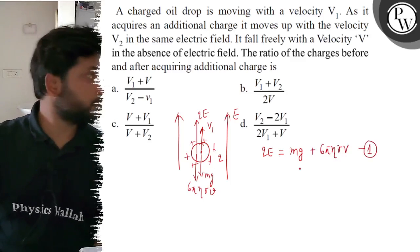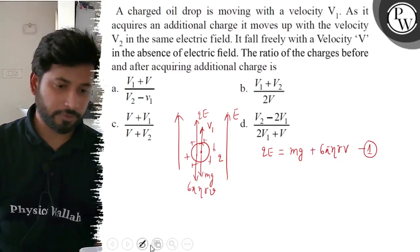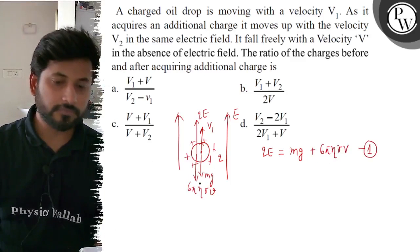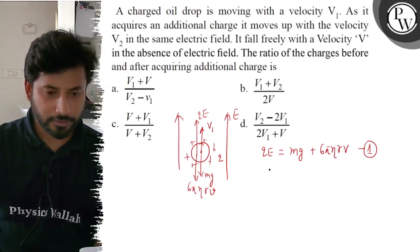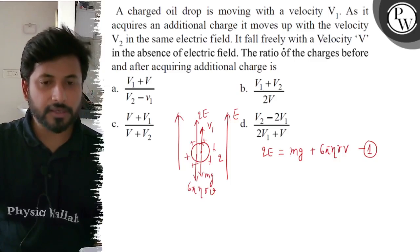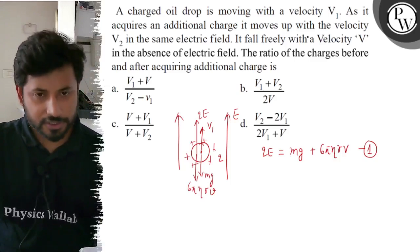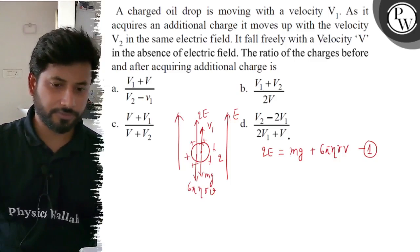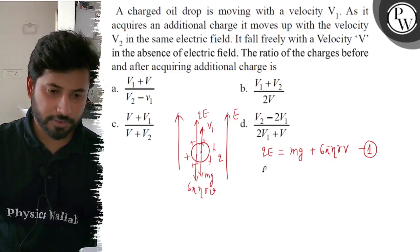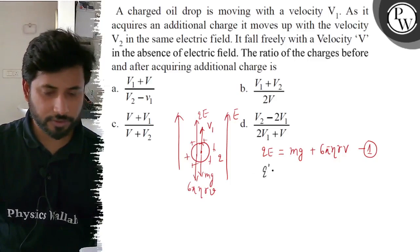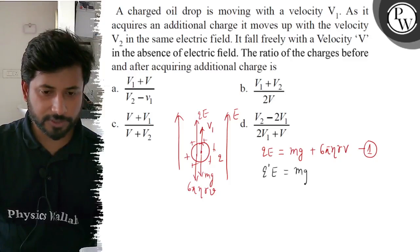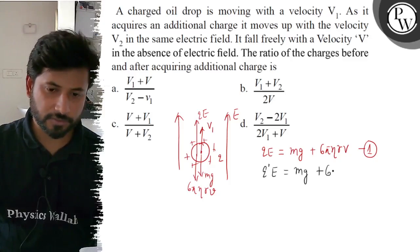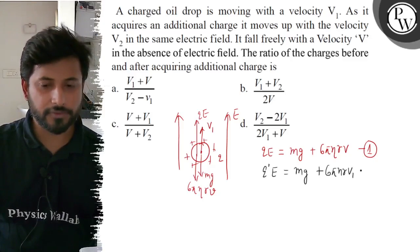In the other case, we have additional charge with velocity V2. Q'E equals mg plus 6πηRV2.